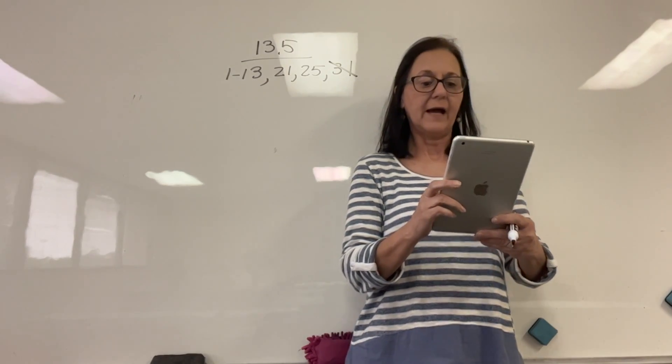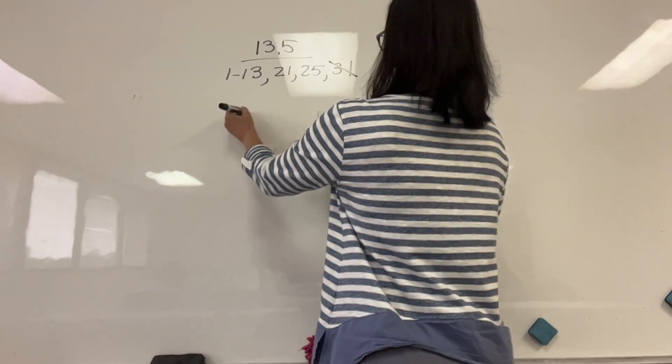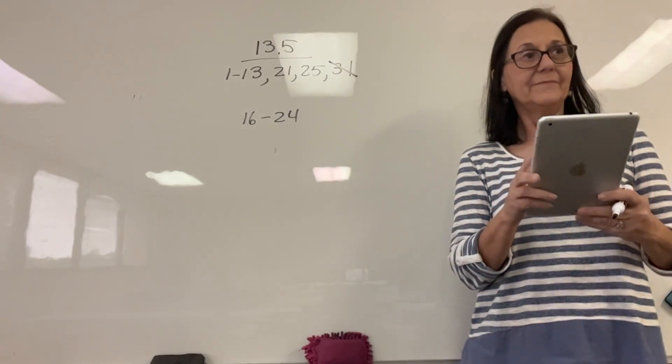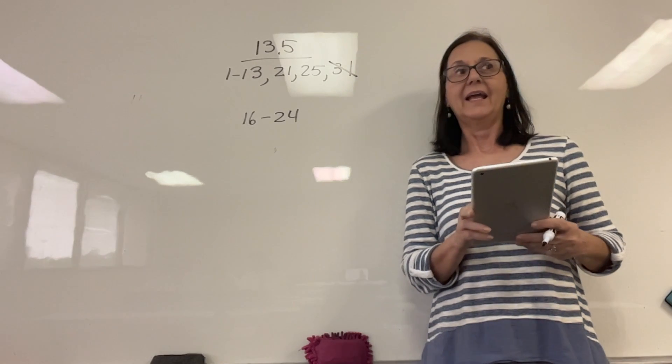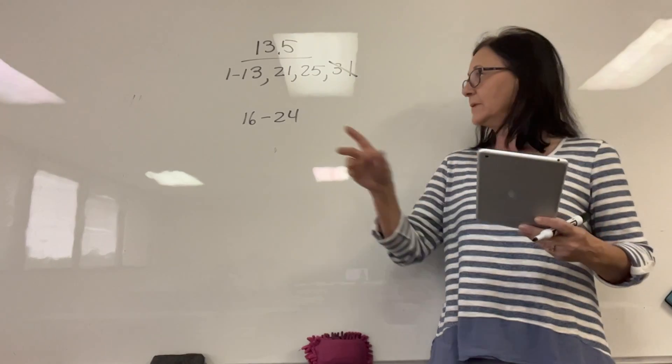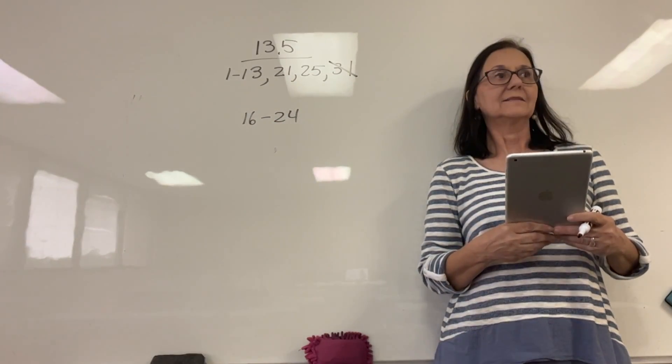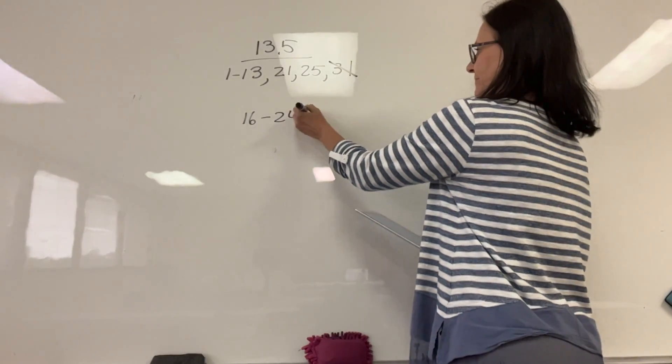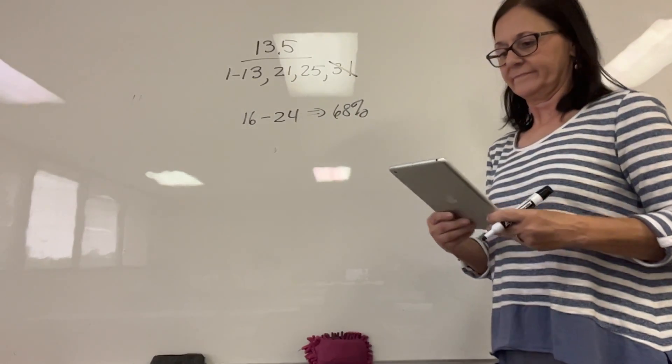Estimate the area using that same curve. This is number three, from 16 to 24. Does everybody see that? 16 to 24, what would it be? 68%. One standard deviation. Do you just have it in percentage? Correct.